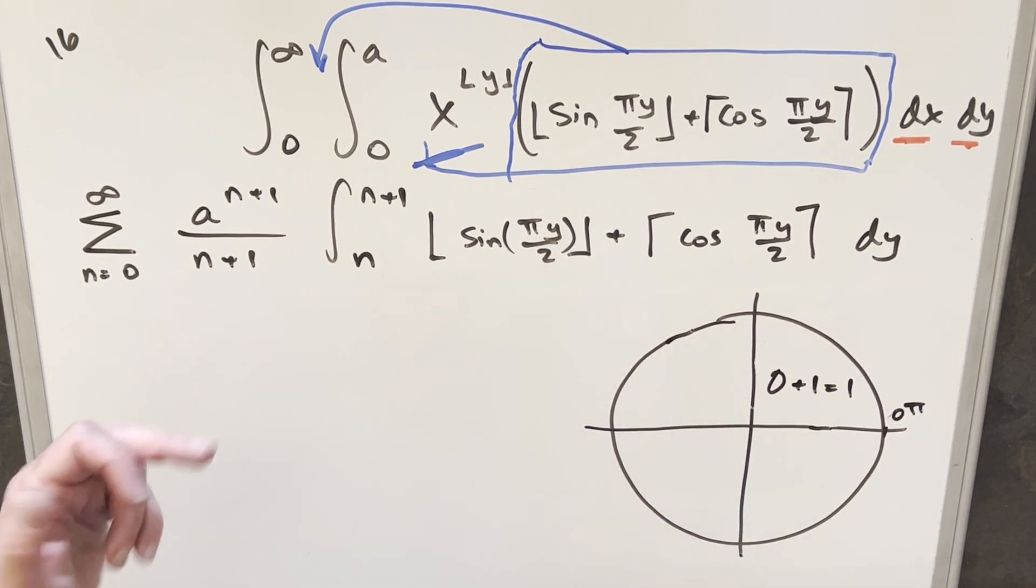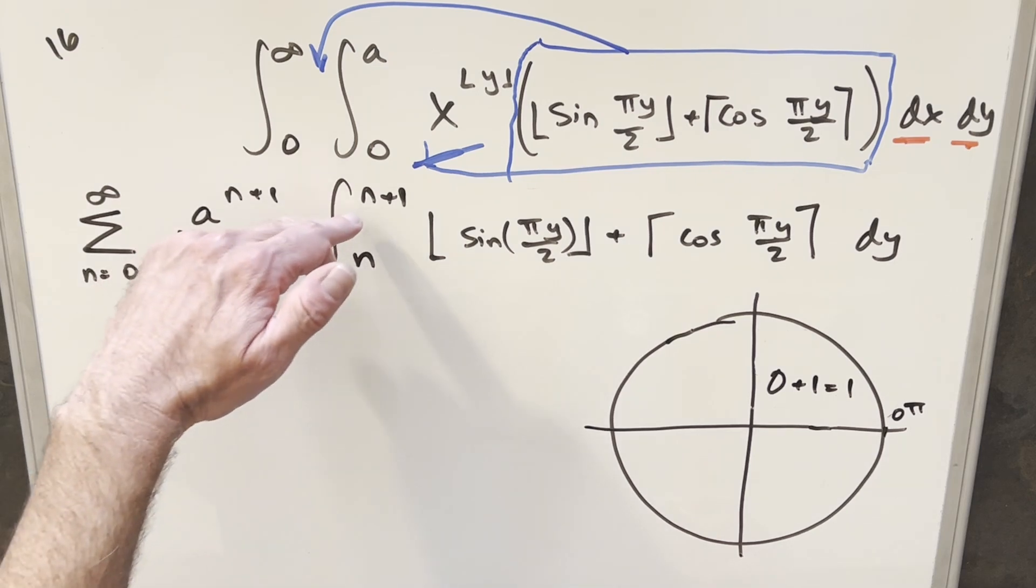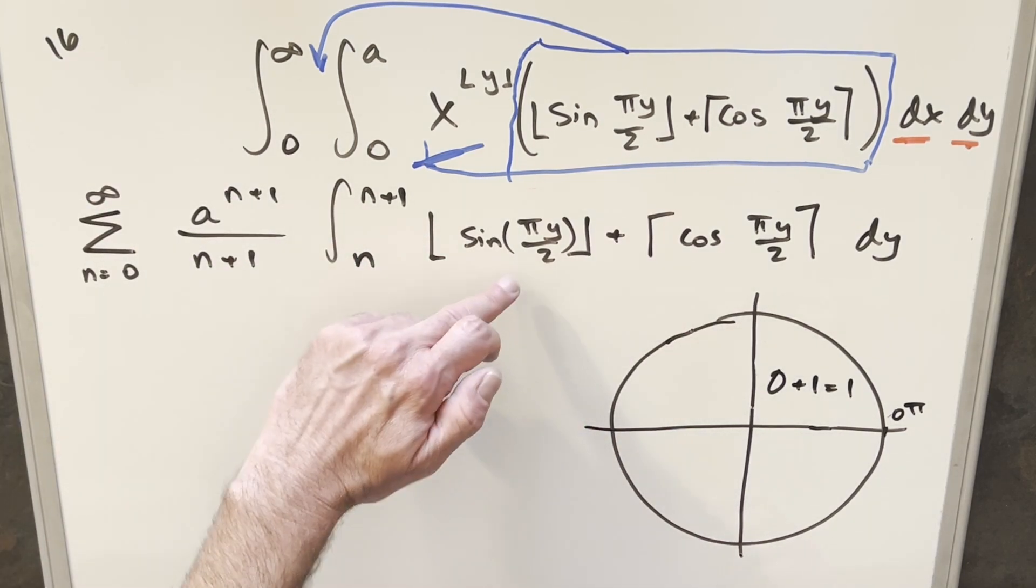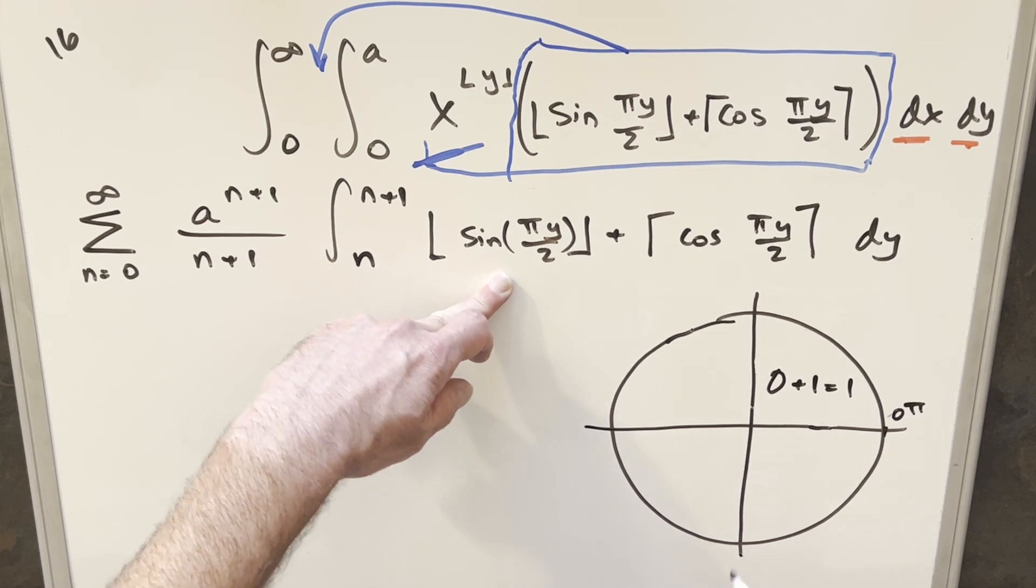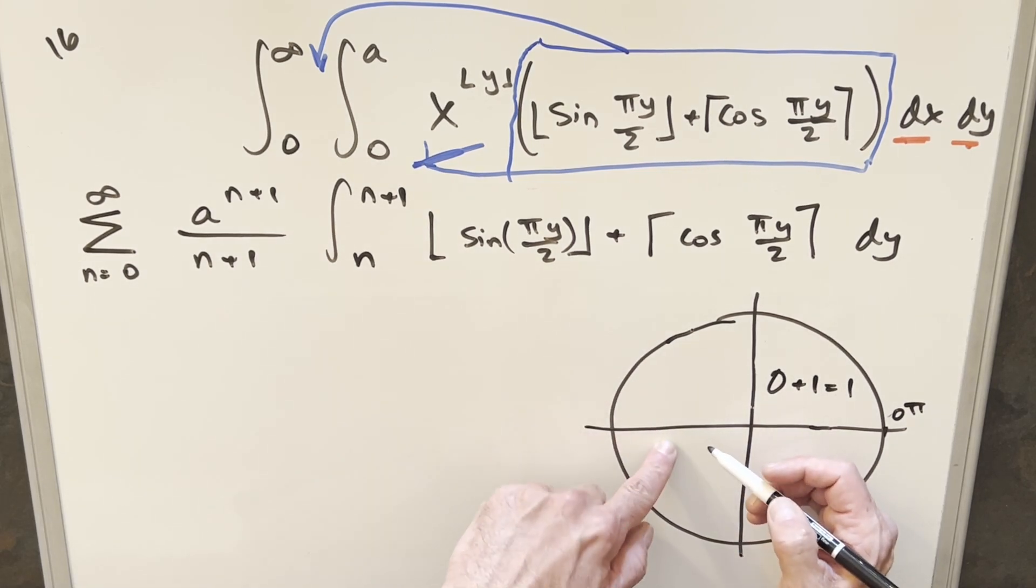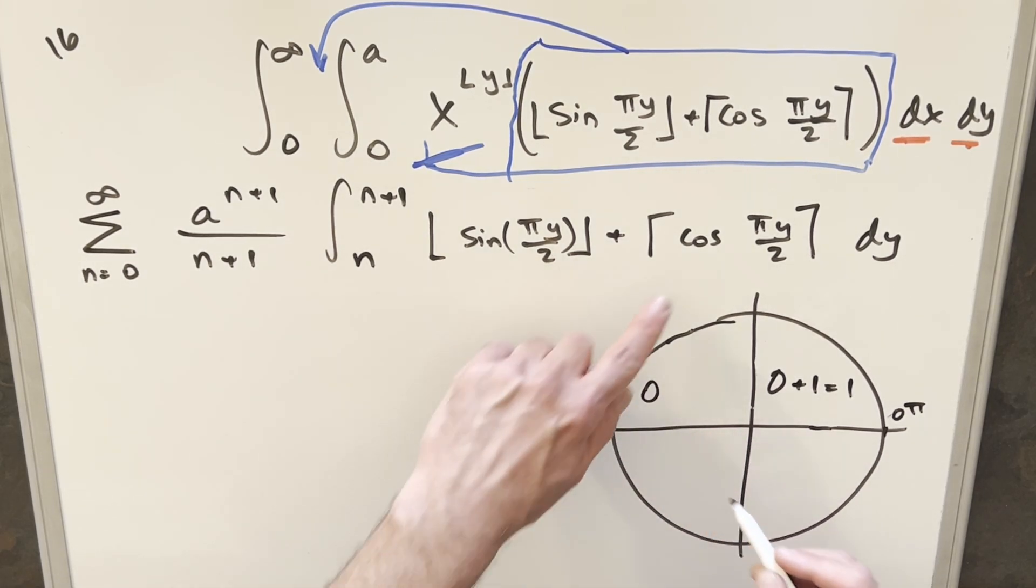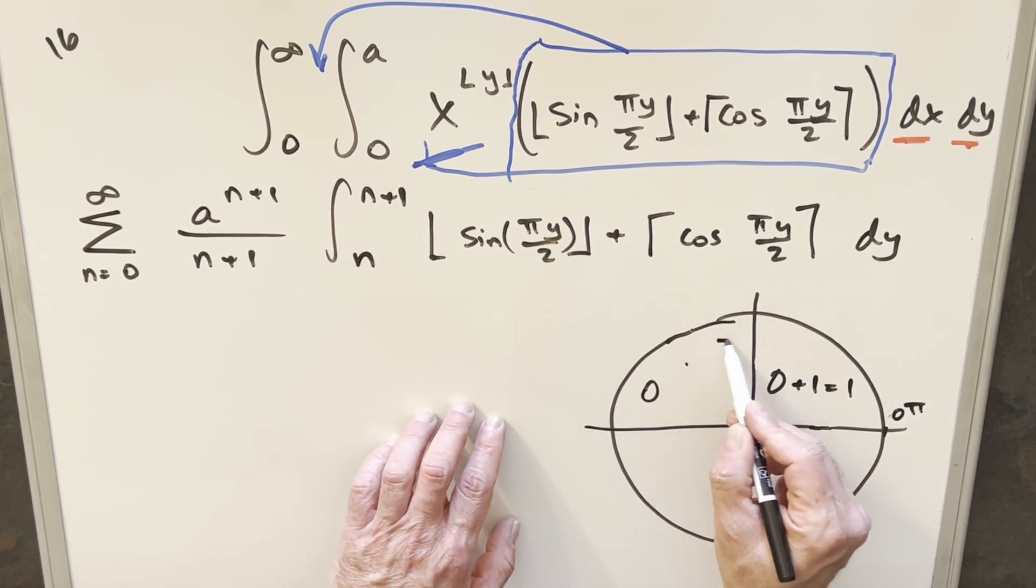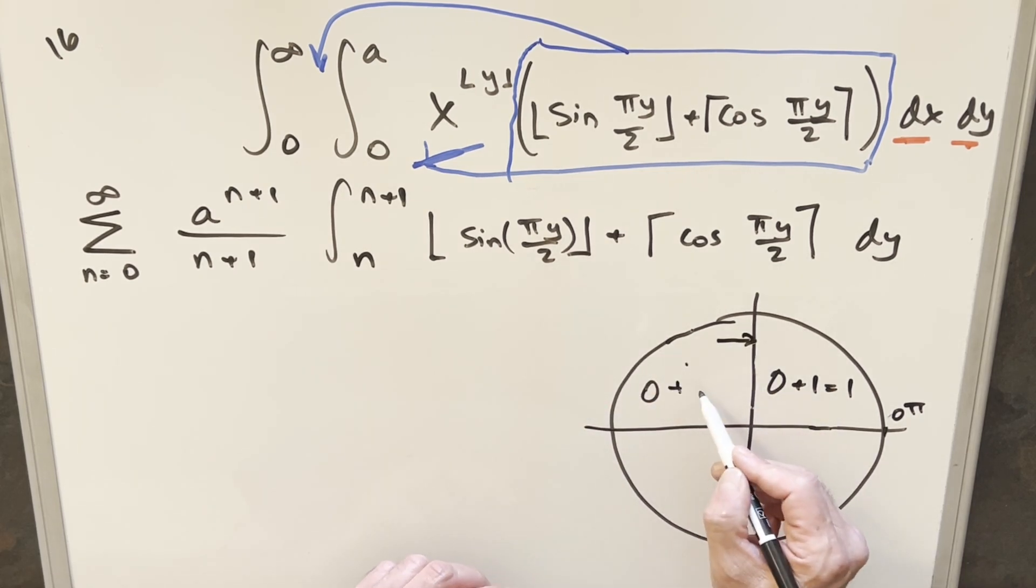Next we can look at quadrant number two. This is going to happen when n is one, n plus one is two. So you're going from pi over two to pi. What's going to happen with our sine values, they're all going to get rounded down to zero. So this first part is going to be zero. Cosine is going to take us up, but from here, rounding up just gets you back to zero. So this is going to be zero plus zero, which is just zero.